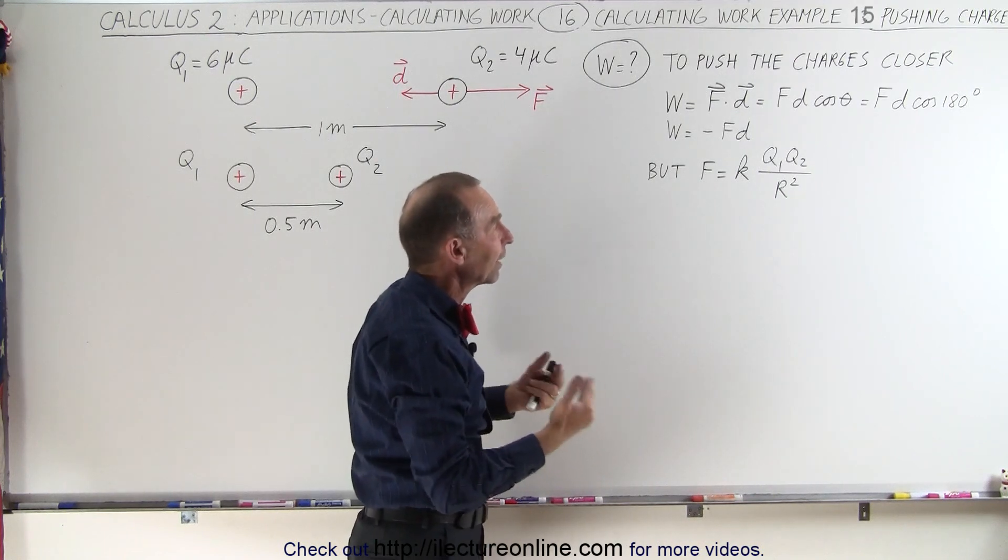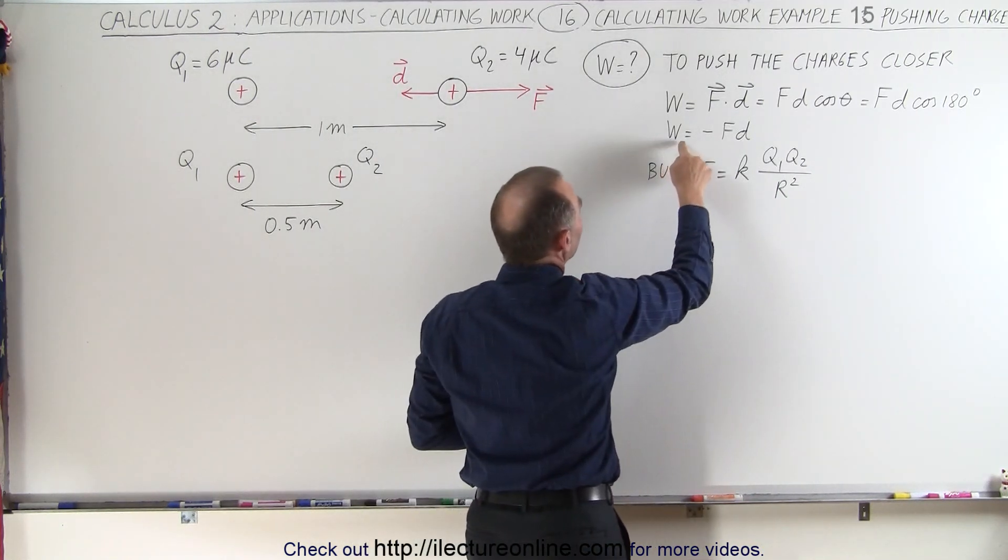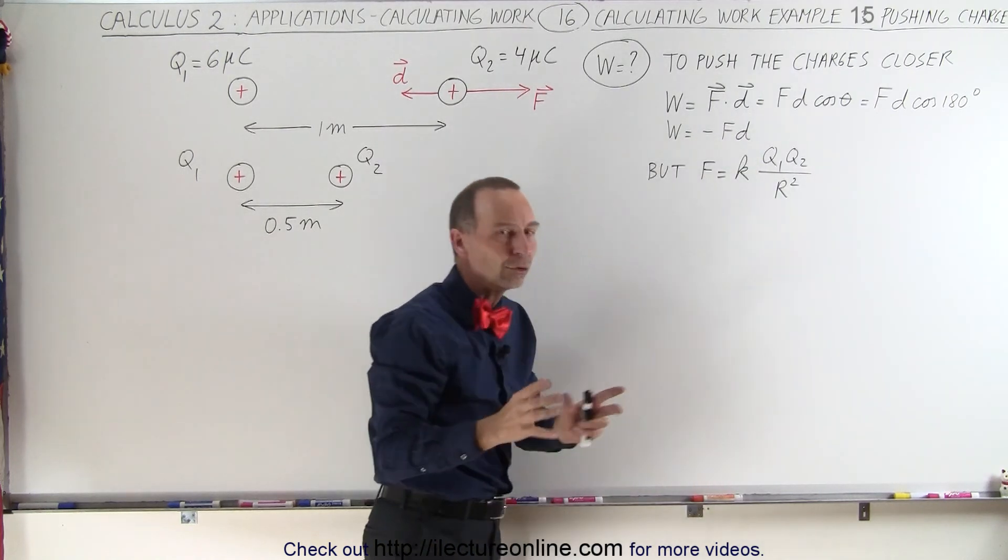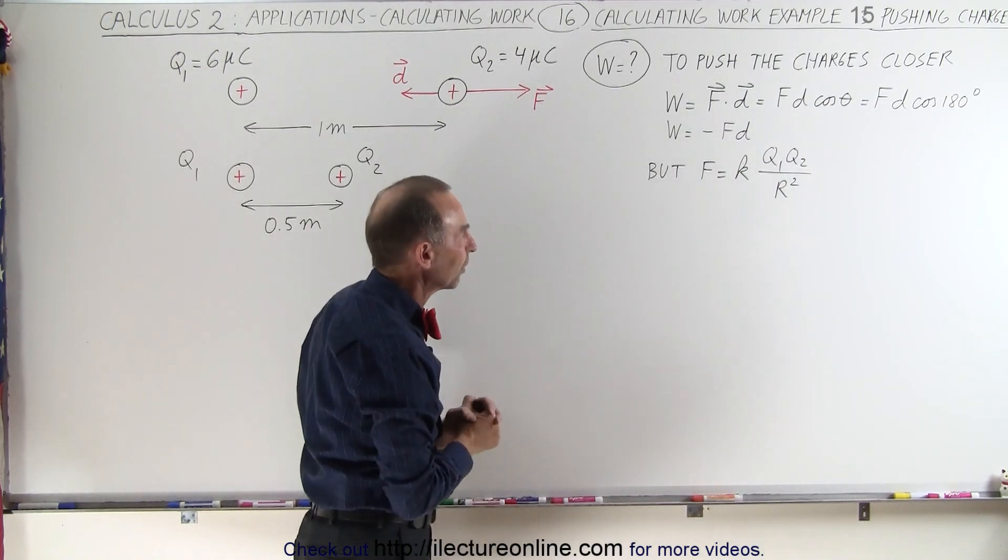And the cosine of 180 is minus 1. So the work done is equal to minus the force times the displacement, or the magnitude of the force times the magnitude of the displacement.